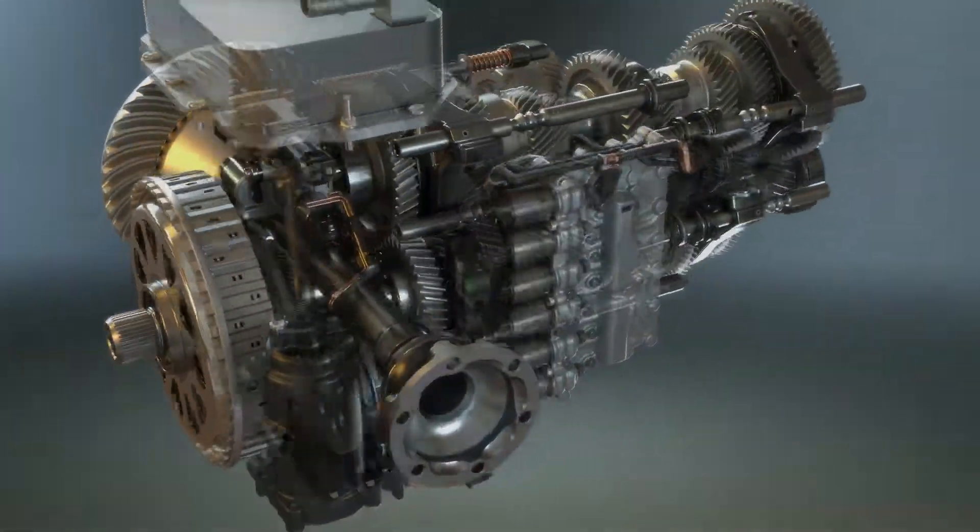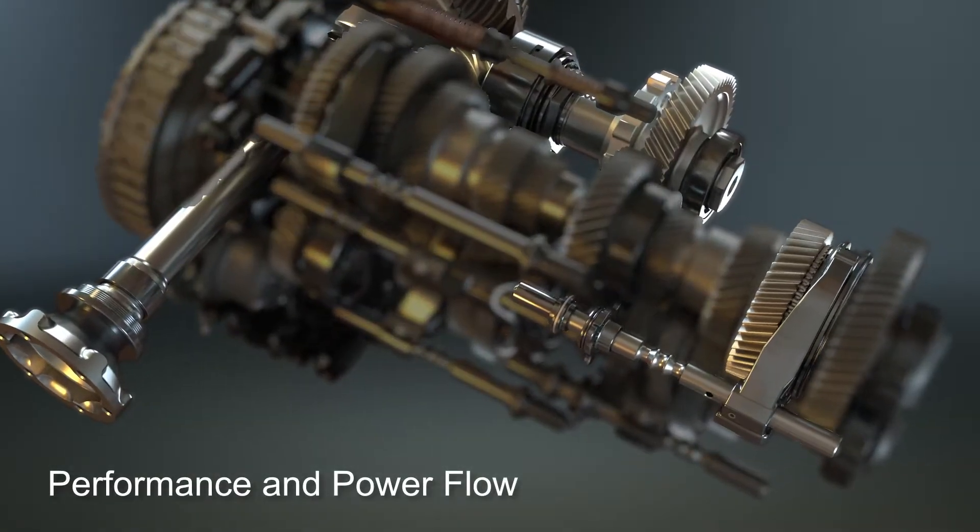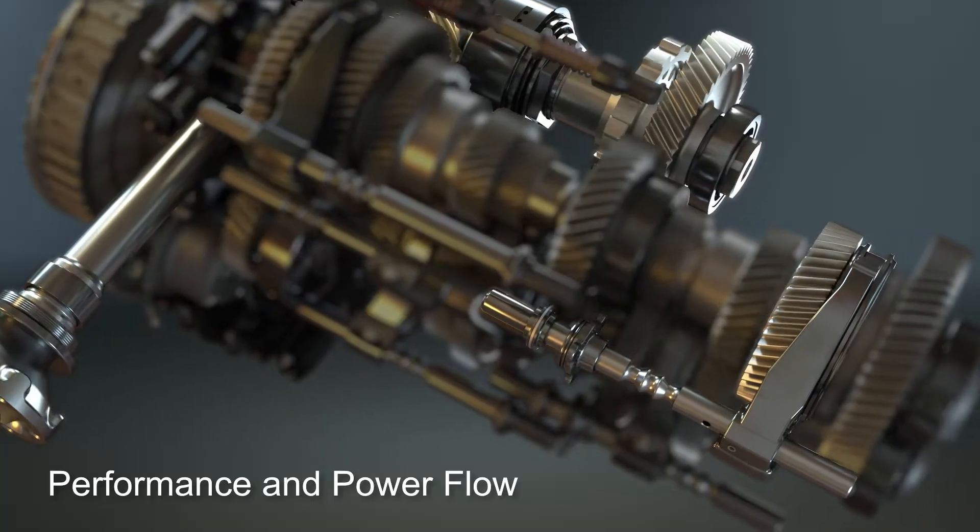Like a manual transmission, all gears in the Tremec DCT mesh constantly. No torque is transferred until the synchronizer locks the gear to the shaft.